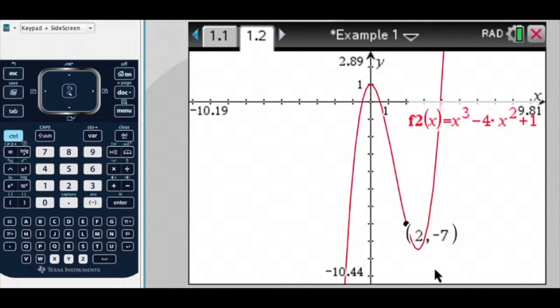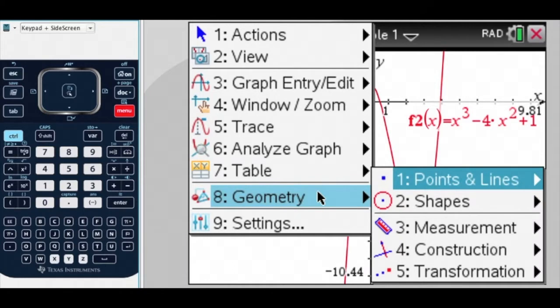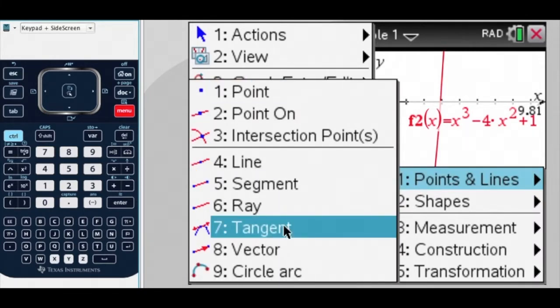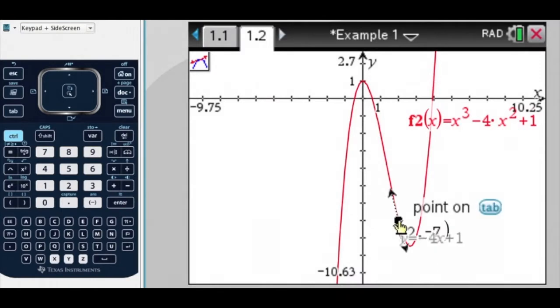Okay, so now let's find our tangent. So menu, Geometry, Points and Lines, Tangent. Okay, that point right there, y equals negative 4x plus 1.